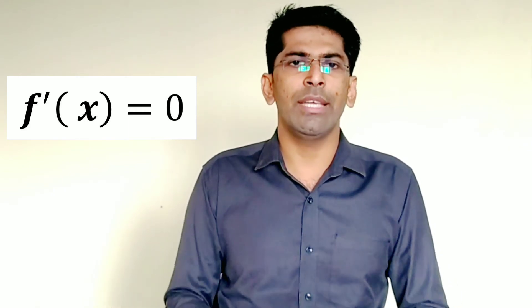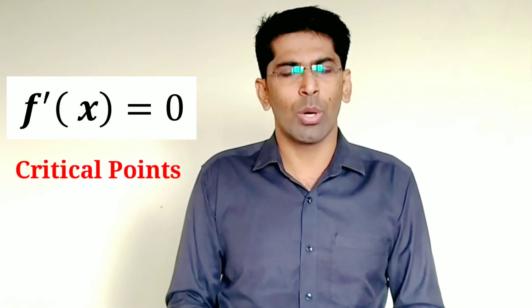For a function to be maximum or minimum at a, the function must be relatively flat — that is, neither increasing nor decreasing at a. To check this, the first derivative of the function at a must be zero or undefined. The point in the domain where the first derivative is equal to zero or is undefined is called the critical values or critical points.